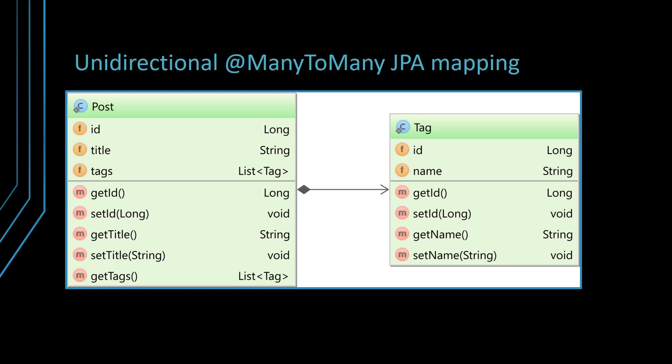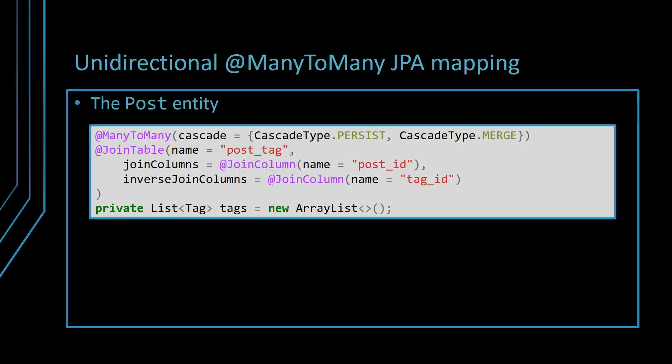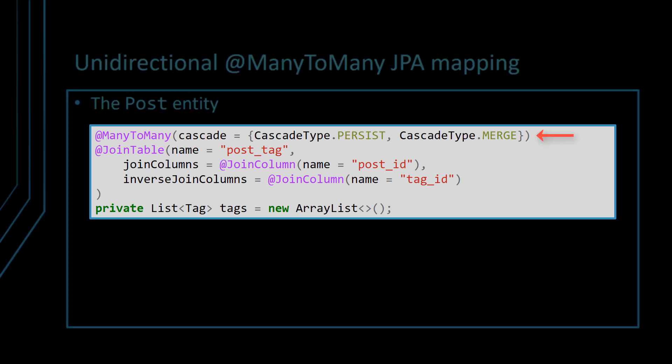Just like it was the case with other JPA associations, the many-to-many relationship can be either unidirectional or bidirectional. In a unidirectional many-to-many association, only one side maps this JPA relationship. For instance, in this class diagram, the post entity has a collection of tag entities. The tag entity does not map this relationship, hence the many-to-many association is unidirectional. In the post entity, the mapping is done as follows: the @ManyToMany annotation is placed on the collection of tag entities, and the @JoinTable allows you to provide the name of the join table, as well as the two foreign key columns which build the many-to-many table relationship.